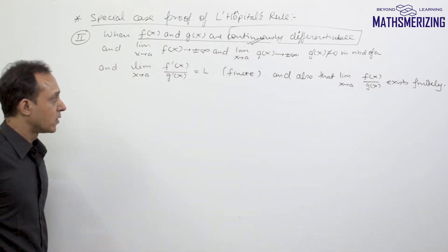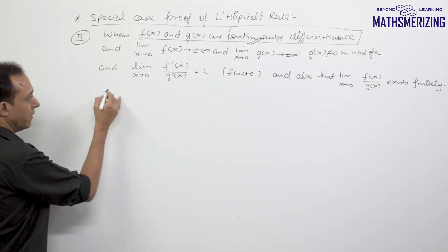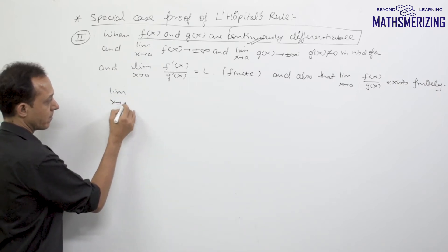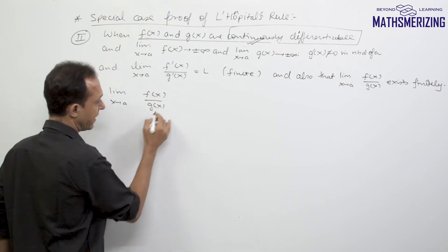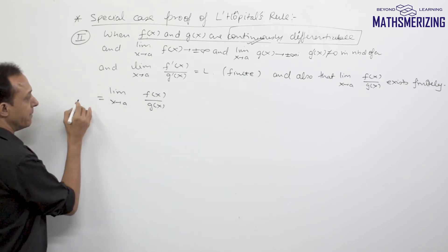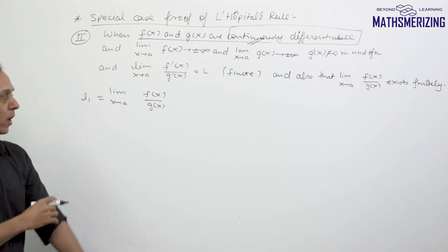So I'll start with limit x tends to a of f(x) upon g(x), and I'll say suppose the value of this limit is L1.